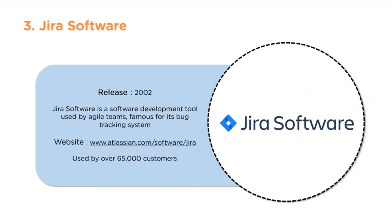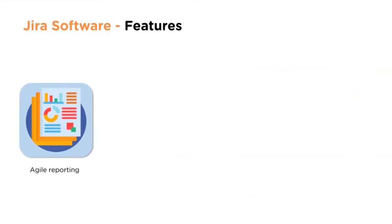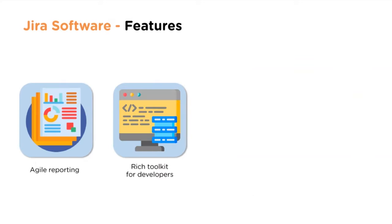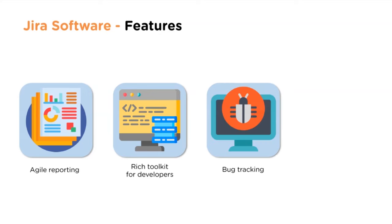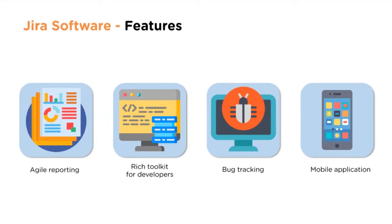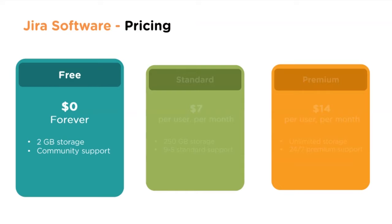Jira Software was released in 2002. It is a software development tool used by agile teams, famous for its bug tracking system. The website is www.atlassian.com/software/jira, used by over 65,000 customers. Features include agile reporting, a rich toolkit for developers, bug tracking, and mobile applications.